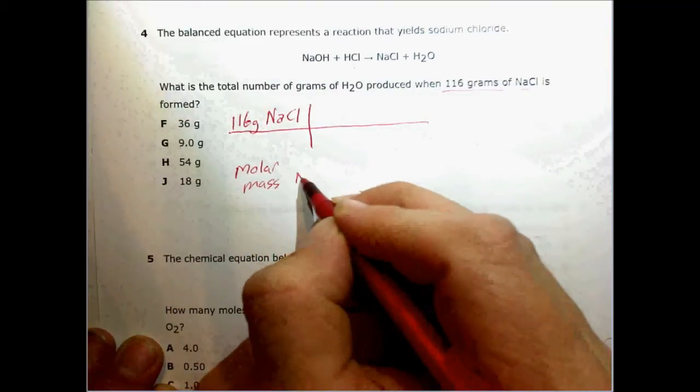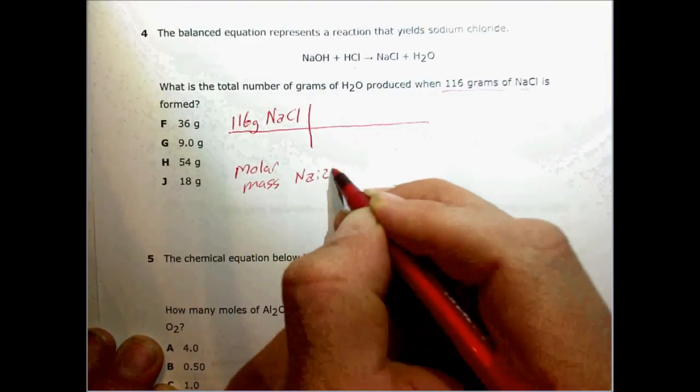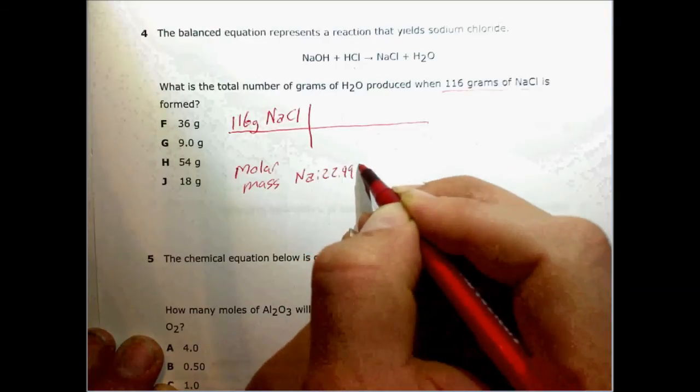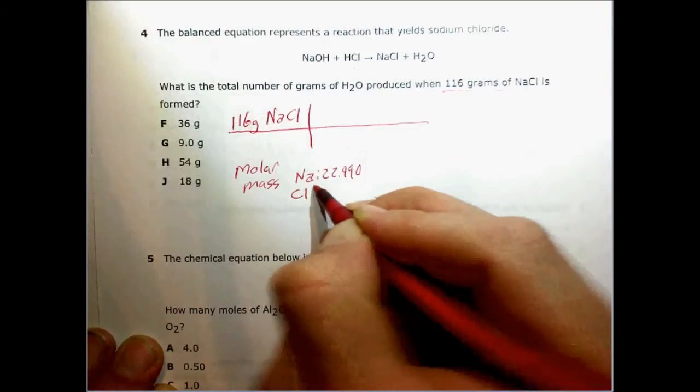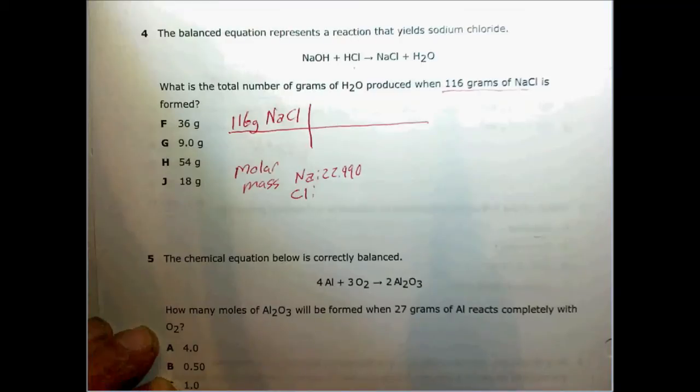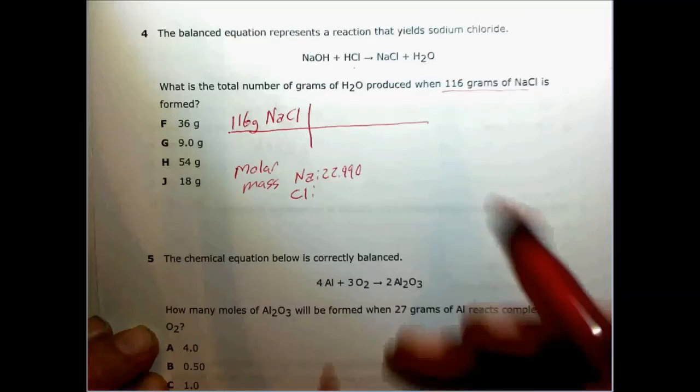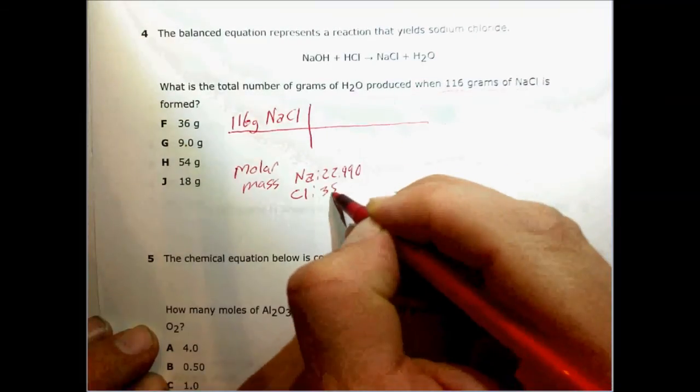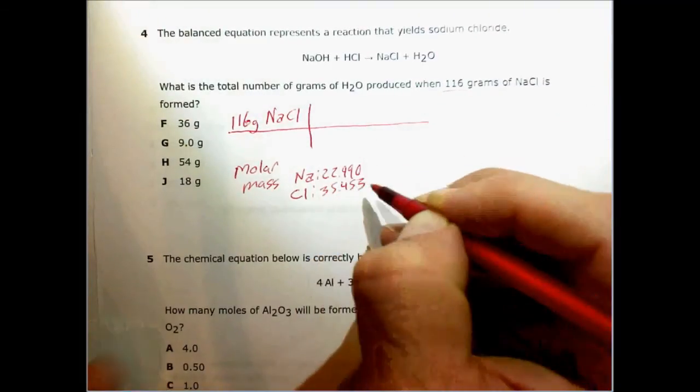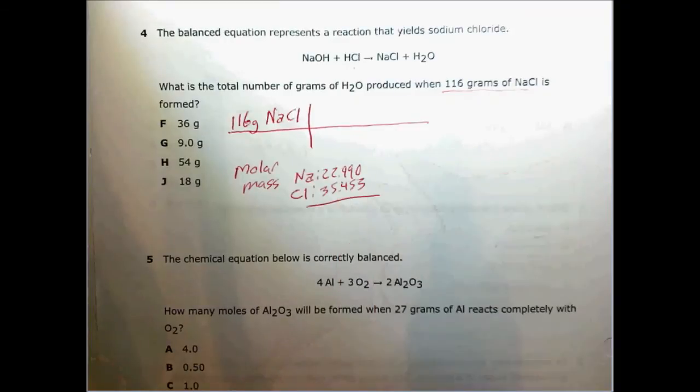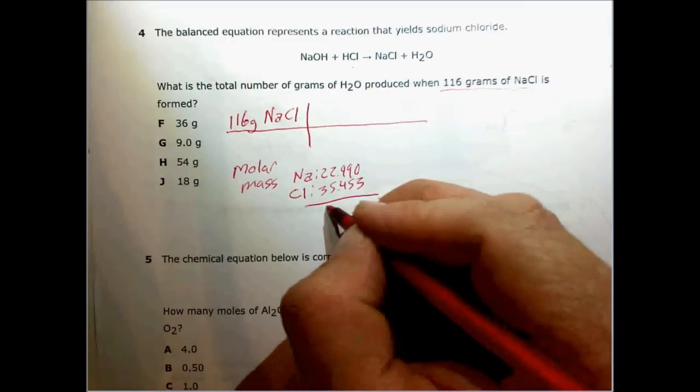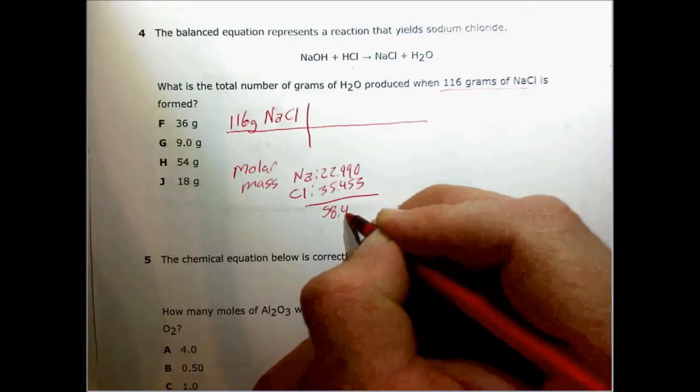We can do that by adding the molar mass of Na, which is 22.990, to the molar mass of Cl, which when I look on my periodic table, I see is 35.453. When I add these together, I get 58.443.